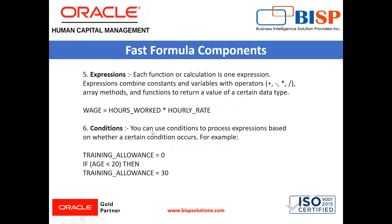Next is condition. You can use conditions to process expressions based on whether a certain condition occurs. This formula checks if the condition age less than 20 is true or false. If it's true, the formula processes the statement — for example, if age is less than 20, training allowance is 30. If the condition is false, the formula ignores this statement.